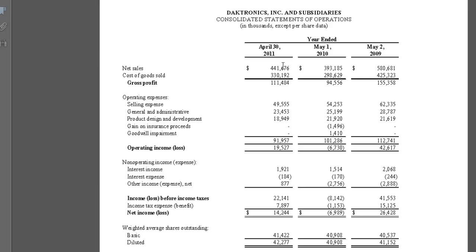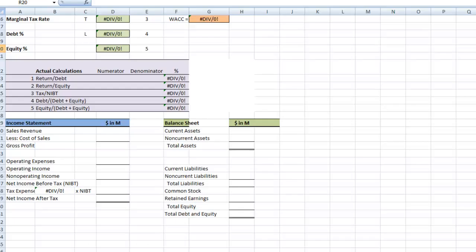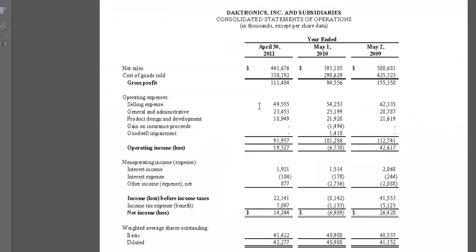Let's pick up our sales revenue, which is 441.7 million. You can see it says in thousands up here, plus you have another three digits before the 441, so it's 441.7 million. We're going to enter that in our spreadsheet: 441.7. We do the same thing for the cost of sales — we have 330.2 — and we're going to enter that in the next cell.